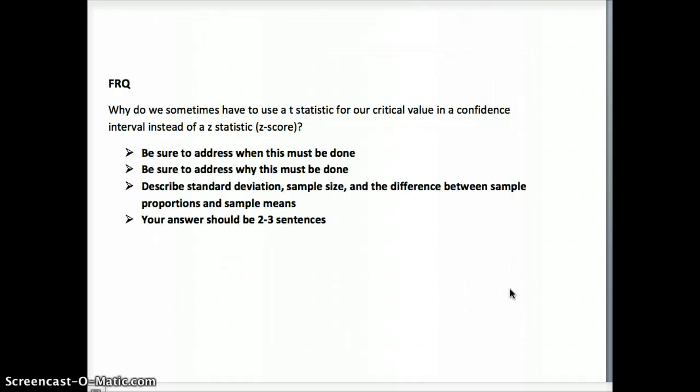Okay, so here's your free response. Why do we sometimes have to use a t statistic for our critical value in a confidence interval instead of a z statistic? Some key things I want you to address: when this must be done and why. And then use words like standard deviation, sample size, and then show the difference between sample proportions and sample means. Not a long answer, just two to three sentences, and get to the point of what the difference is, please. So pause this, read over the 8.3 summary in your book, look through the examples, especially the visuals on the critical value, and then submit your free response answer. Have a great day. Take care.